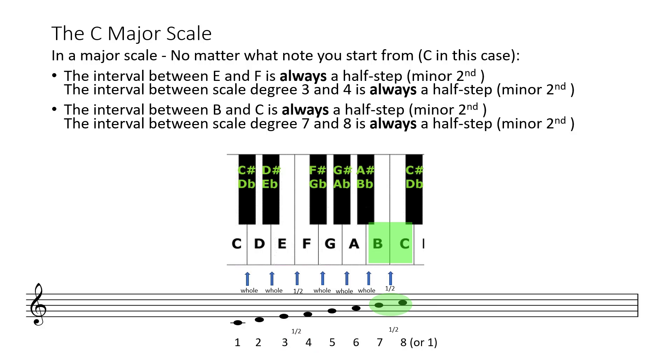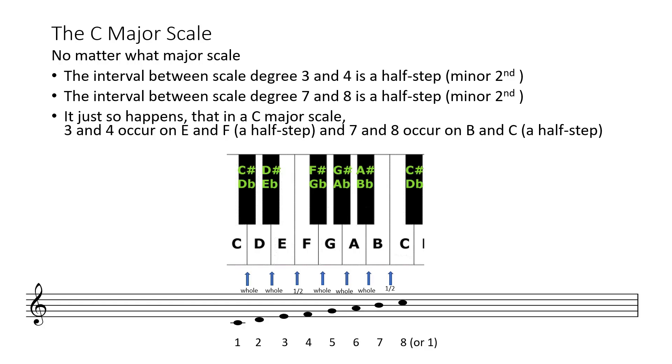The interval between B and C is always a half step, minor second. The interval between scale degree 7 and 8 is a half step, minor second.